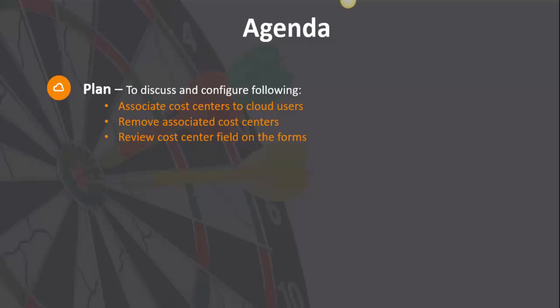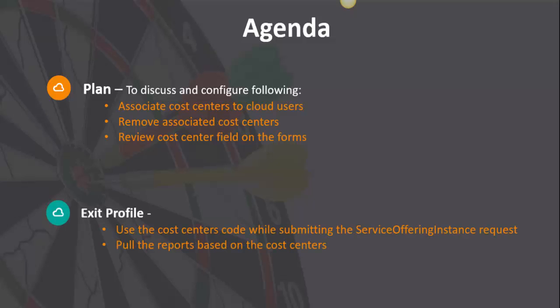The plan is to discuss and configure the following: associate cost centers to cloud users, remove associated cost centers, and review the cost center field on the forms. Once you're done with this configuration, you can use the cost center code while submitting the SOI request. You can also use the cost center code to pull reports from the database.